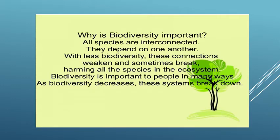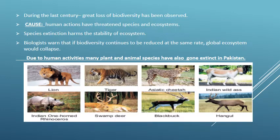Now the question is: why is biodiversity important? All species are interconnected — they depend on one another. With less biodiversity, these connections weaken and sometimes break, harming all species in the ecosystem. Biodiversity is important to people in many ways. As biodiversity decreases, these systems break down. During the last century, great loss of biodiversity has been observed due to human actions, which have threatened species and ecosystems. Species extinction harms the stability of ecosystems. Biologists warn that if biodiversity continues to be reduced at the same rate, the global ecosystem would collapse.